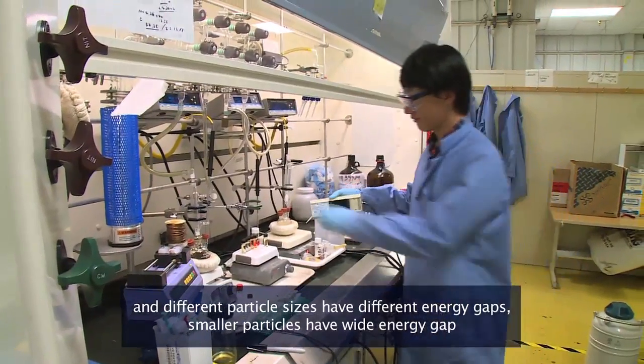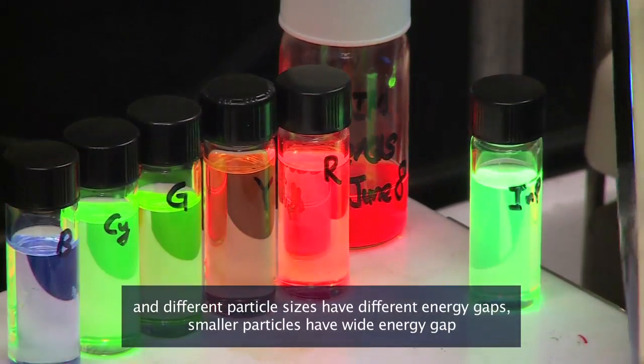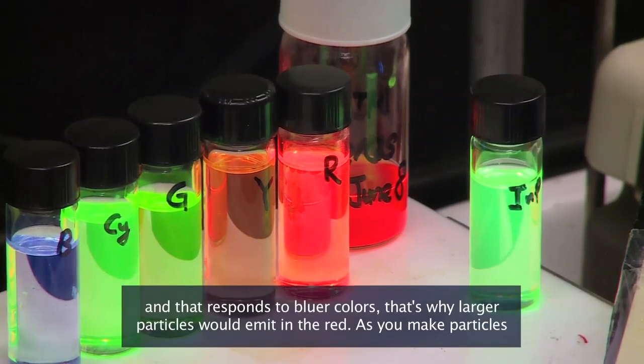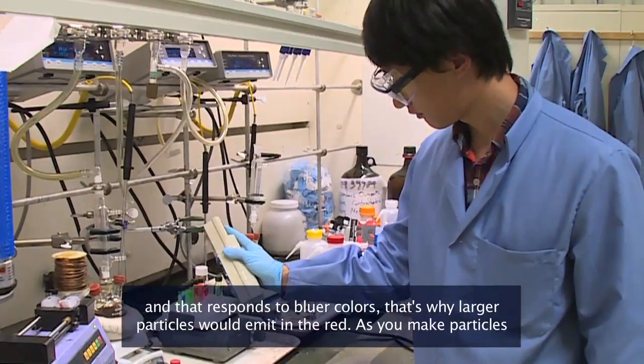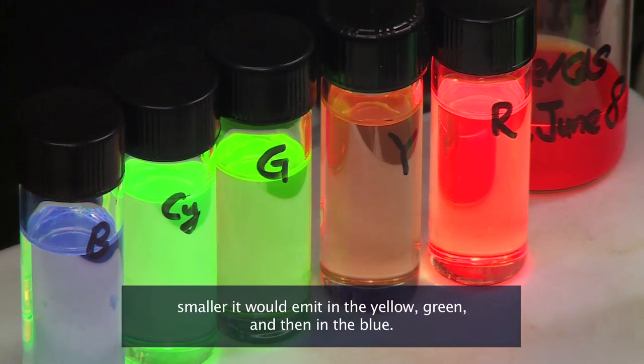Different particle sizes have different energy gaps. Smaller particles have wider energy gap, and that corresponds to bluer colors. That's why larger particles would emit in the red. As you make particles smaller, it would emit in the yellow, green, and then in the blue.